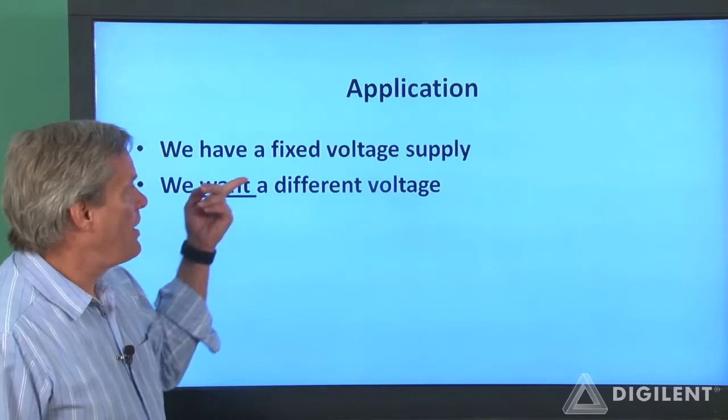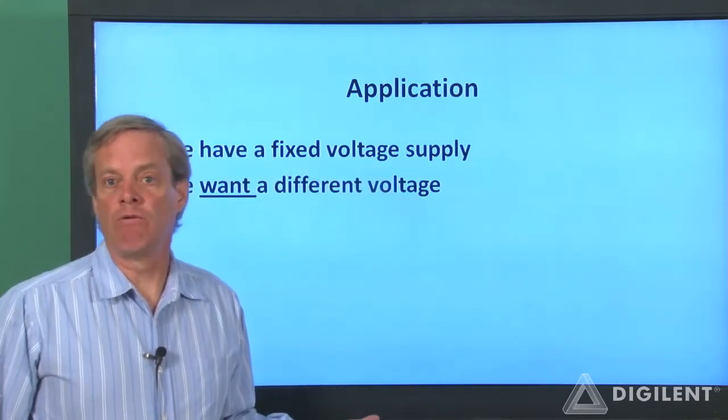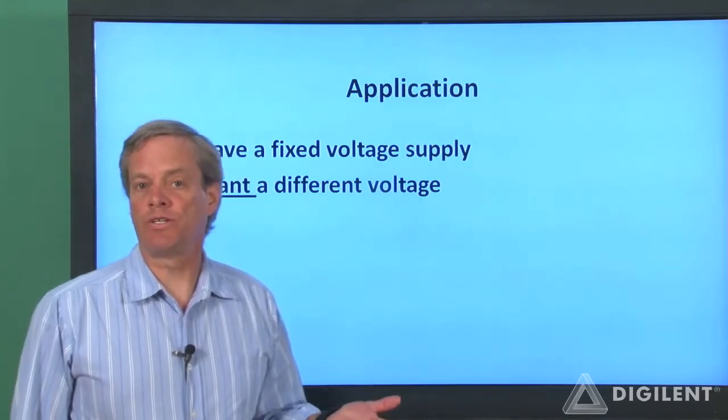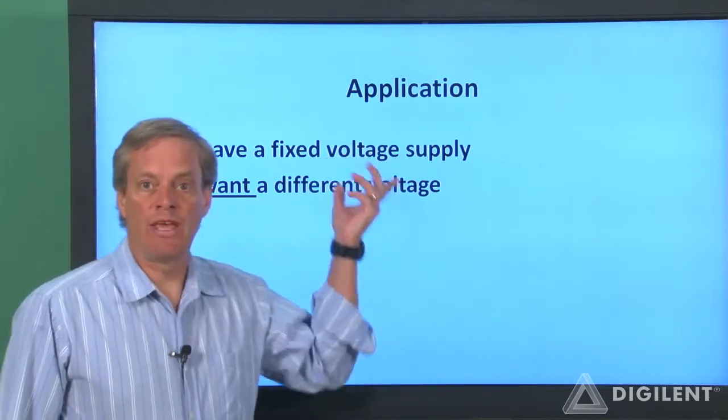In our application, we have access to a particular voltage source, a battery, for a circuit we want to build. However, the voltage we actually want to use in our circuit, for whatever reason, is different from the battery voltage we have access to.